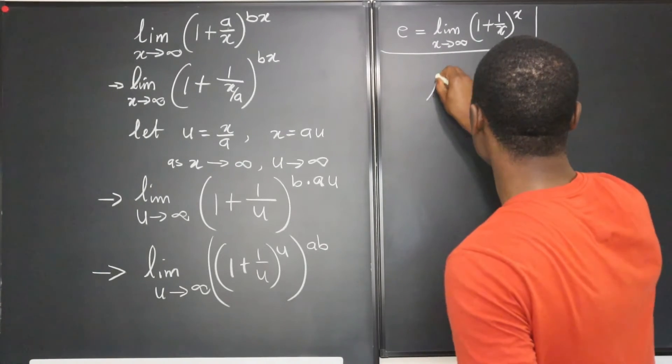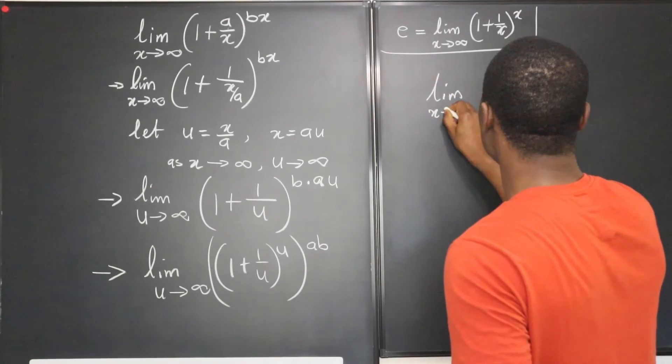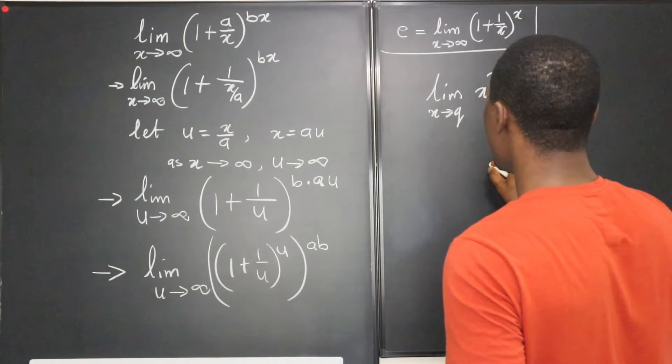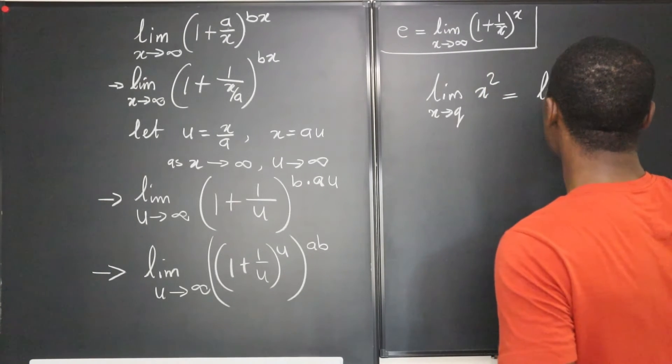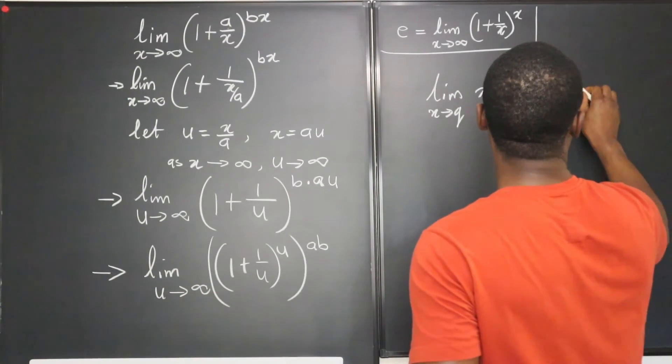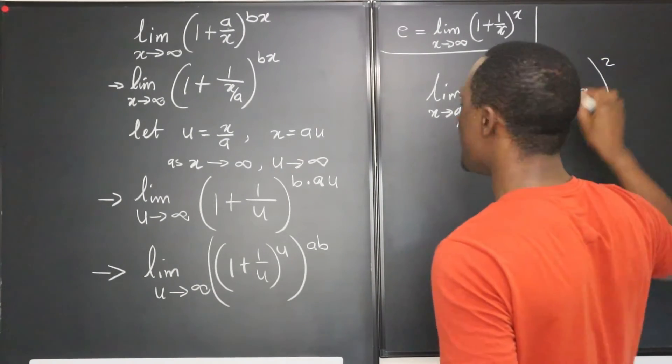Which means that the limit of this to this power will be the same thing as if you take the limit of this and then take the power of it. So it's just like saying the limit as x approaches q of x squared is the same thing as the limit as x approaches q of x, then you square it.